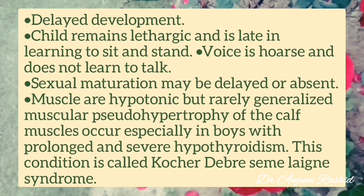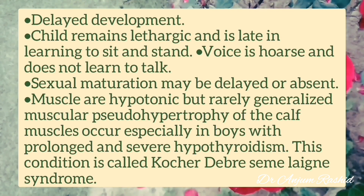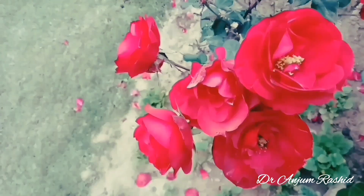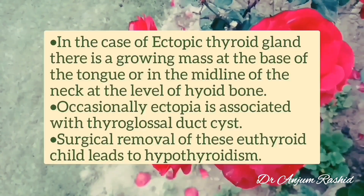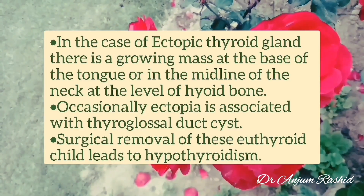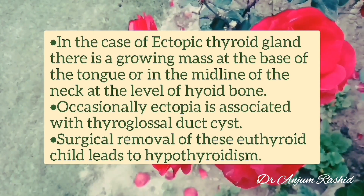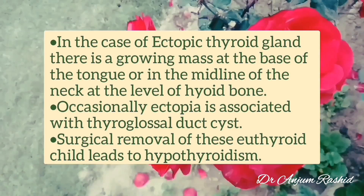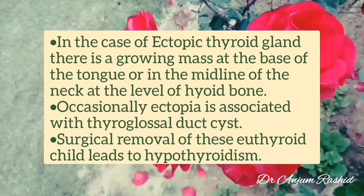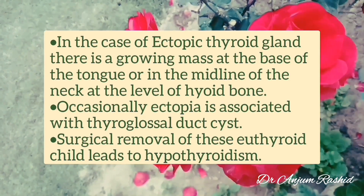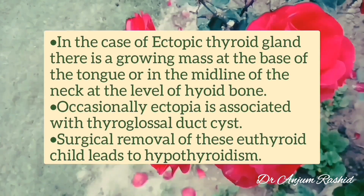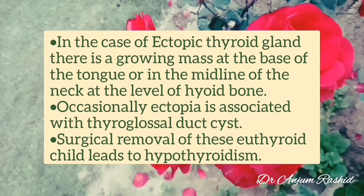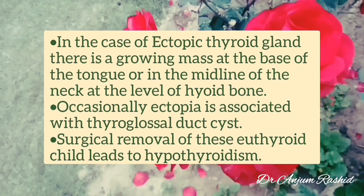Prolonged and severe hypothyroidism with calf muscle pseudohypertrophy is called Kocher-Debré-Sémélaigne syndrome. In the case of ectopic thyroid gland, there is a growing mass at the base of the tongue or in the midline of the neck at the level of the hyoid bone. Occasionally, ectopia is associated with a thyroglossal duct cyst.